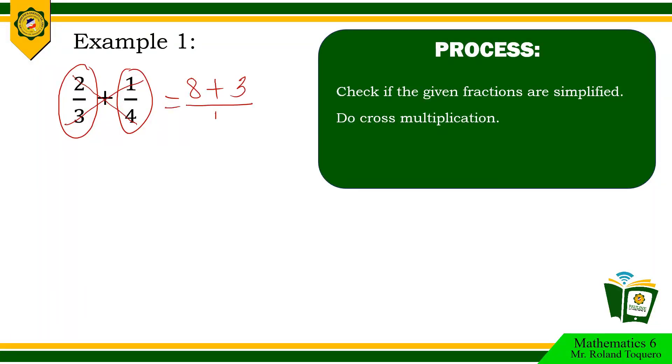Add the numerators. 8 plus 3 equals 11, then copy 12 as the denominator. The answer is 11 over 12. If the answer is not yet in the lowest term, then simplify.